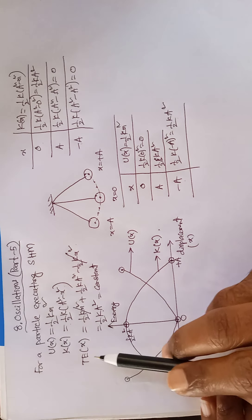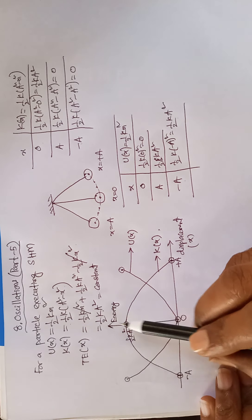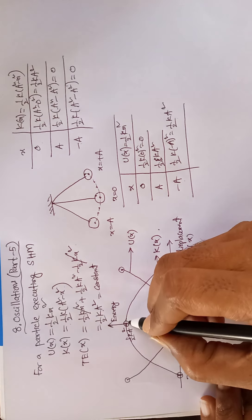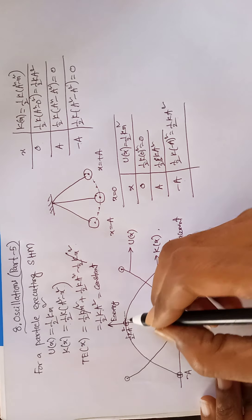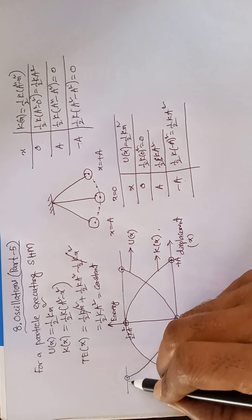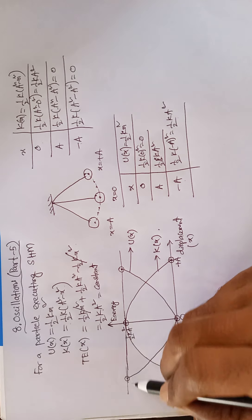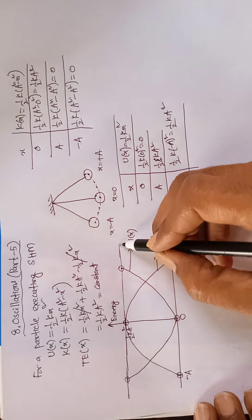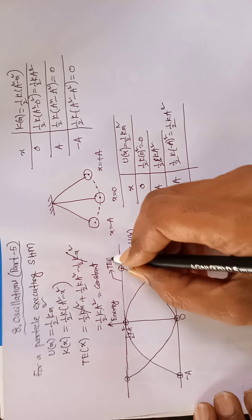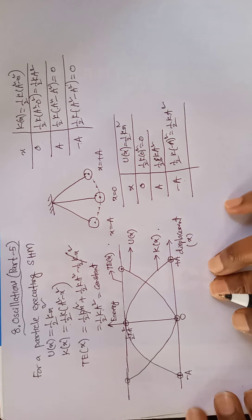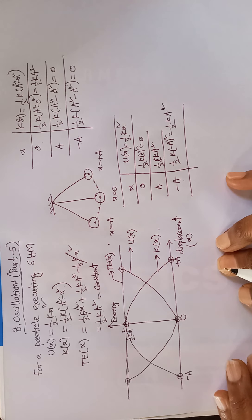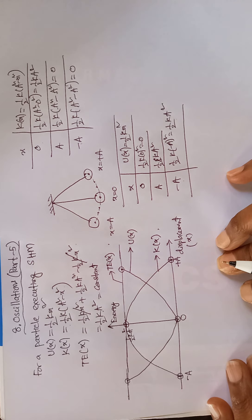Now, total energy equals ½ka², which is a constant. For any x value, total energy is ½ka², so we get a horizontal straight line. This straight line represents total energy.